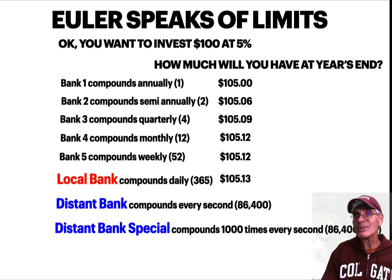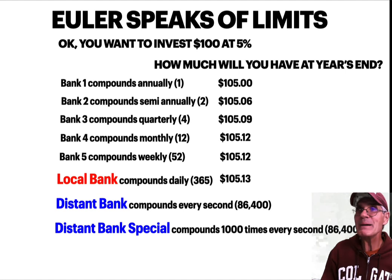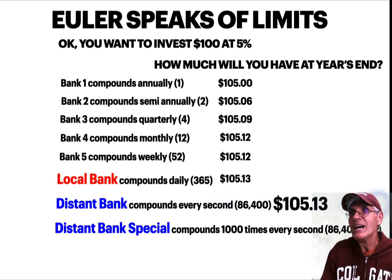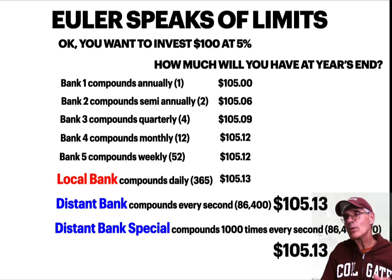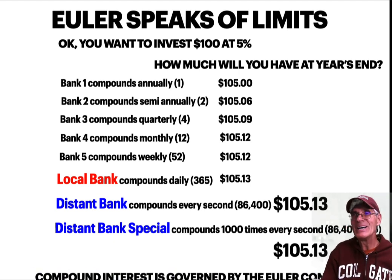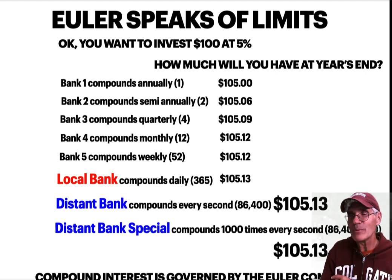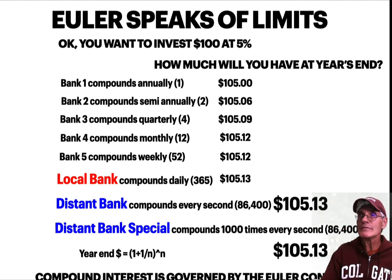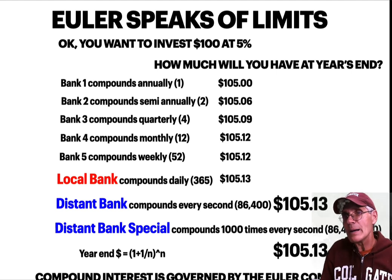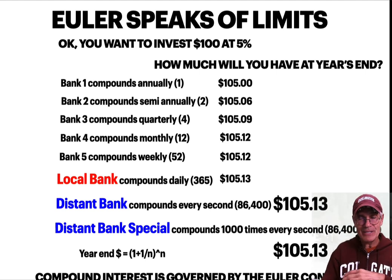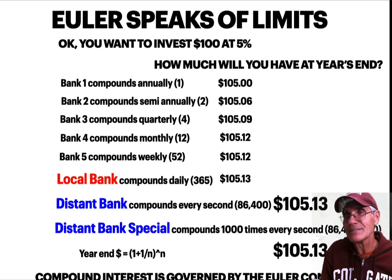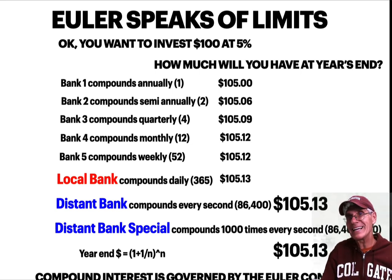Compounding every second 86,000 times a day? Still $105.13. A thousand times every second? Still $105.13. Euler expresses limits — there are limits in the universe, and compound interest is governed by Euler. You never make more than 2.718 times your principal at that rate. So the Sphinx is beautiful with its Phi proportions, but there are also limits on the Sphinx encoded with Euler — Horemakht is not the unlimited god of the universe. Thanks for watching.